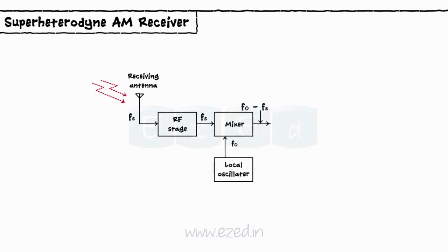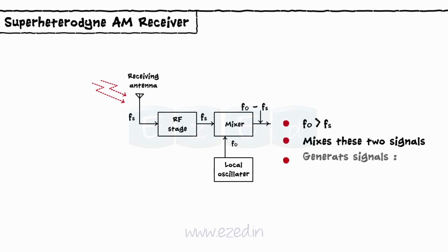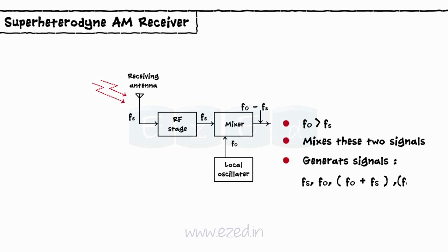Mixer: The mixer receives two inputs — one from the RF amplifier and one from the local oscillator — satisfying the condition that FO is always greater than FS. The mixer mixes these two signals and generates signals having different frequencies: FS, FO, FO plus FS, and FO minus FS.